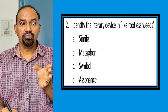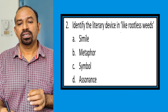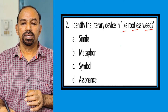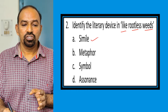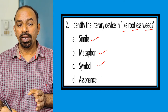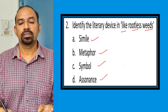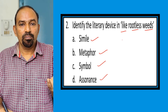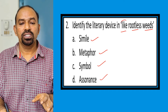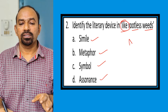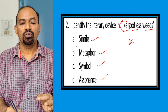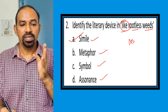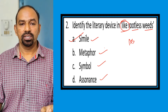Question two: Identify the literary device in 'like rootless weeds'. The options are simile, metaphor, symbol, and assonance. We know that when something is compared with another using the words 'like' or 'as', it is a simile. So simile is the right option here.